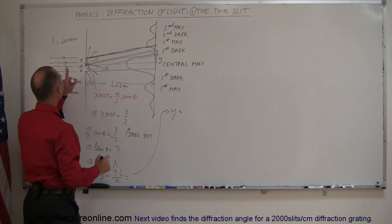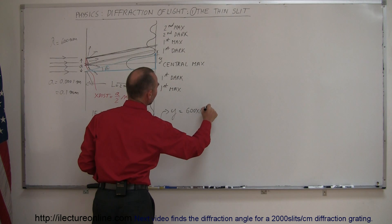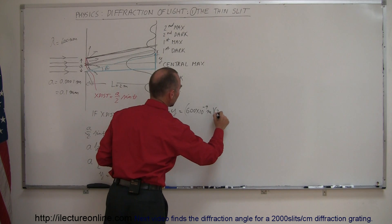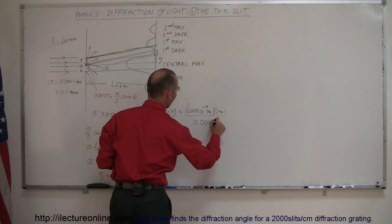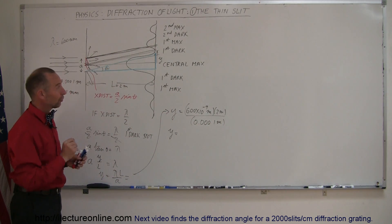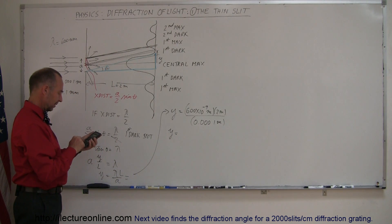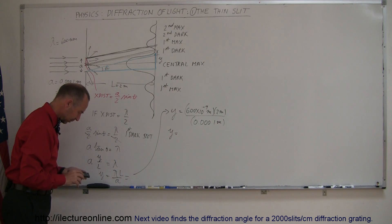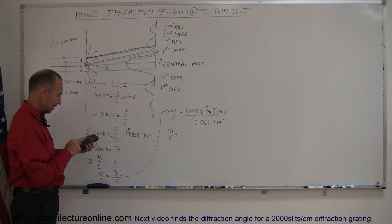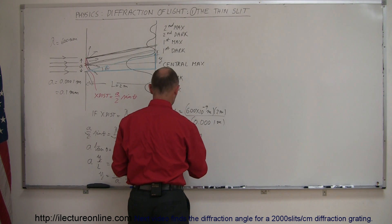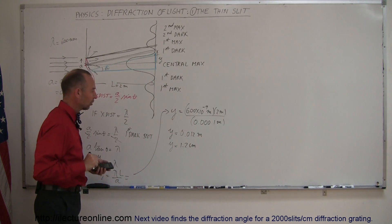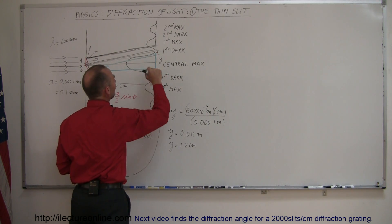We have y equals 600 nm — that's 600 times 10 to the minus 9 meters — times L which is 2 meters, divided by a which is 0.0001 meter. Calculating that: 600e-9 times 2 divided by 0.0001 equals 0.012 meters, which is y equals 1.2 centimeters, or 12 millimeters. So the first dark spot occurs 1.2 centimeters away from the central maximum.